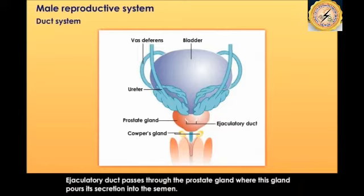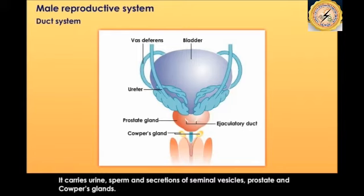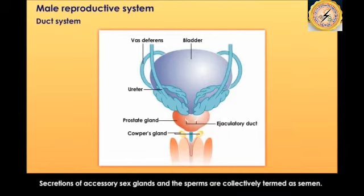The ejaculatory duct passes through the prostate gland, which pours its secretion into the semen. Semen is the sperms plus the fluid released. The ejaculatory duct joins with the urethra to form the urinogenital canal, which carries urine, sperms, and secretions of the seminal vesicle, prostate, and Cowper's gland. However, when sperm passes, urine does not pass simultaneously.